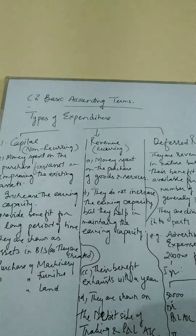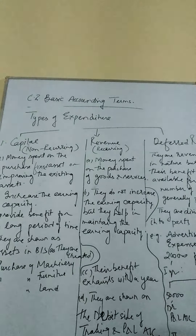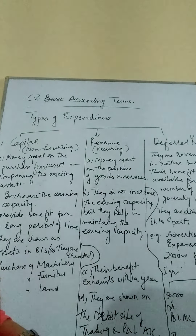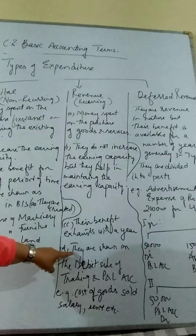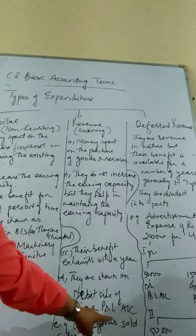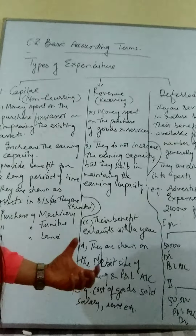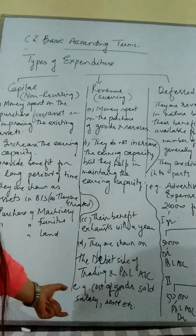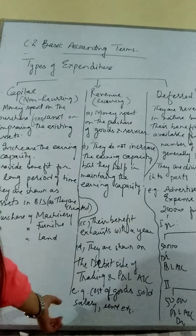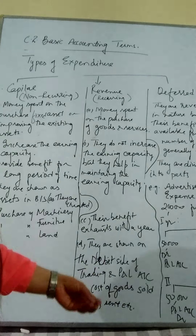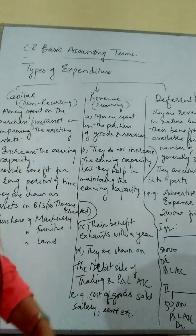The third feature of revenue expenditure is that their benefit exhausts within a year — they will not be utilized for a large number of years. They are shown on the debit side of the trading and P&L account as an expense, which is also a recurring nominal account. Examples of revenue expenditure include cost of goods sold, salary paid to employees, rent for property used in the business, electricity bill, telephone bill — anything which happens monthly or repeatedly in the business.